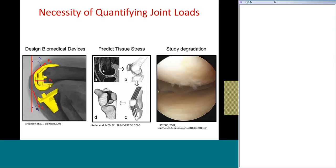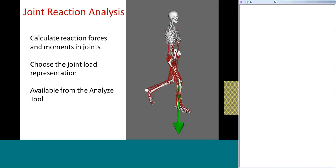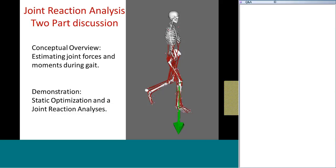OpenSim has a tool to do exactly that, and we call it the joint reaction analysis. Joint reaction is a method that takes a model, its motion, and the forces applied to it, and calculates the reaction forces and moments that result in the model's joints. I'll collectively call these forces and moments joint reaction loads. The analysis also gives you convenient options for choosing how to represent the joint reaction loads it reports. You can set all this up and run a joint reaction analysis through OpenSim's Analyze tool. Today I'm going to talk about joint reactions in a two-part discussion: a conceptual overview of how to estimate joint loads during gait, and after that a live demo in OpenSim to show you how to set up and run a joint reaction analysis.